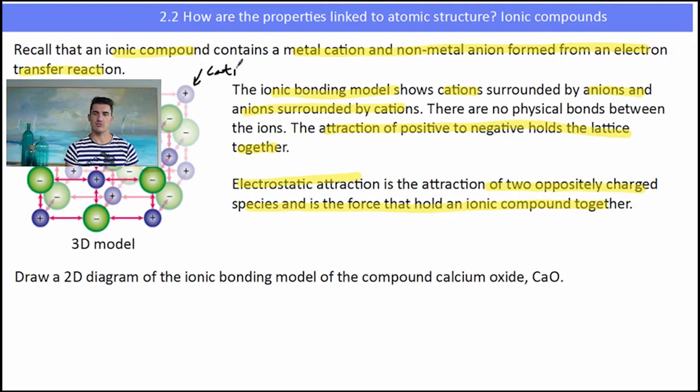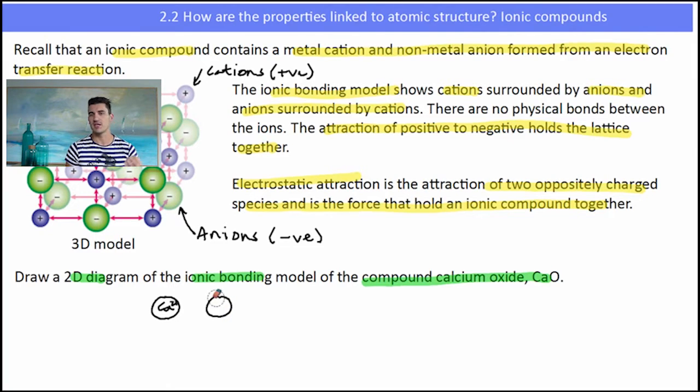Now the electrostatic attraction is described as the attraction between something that's positively charged and something that is negatively charged. So we have the cations in the lattice, which are attracted to the anions in the lattice and each of those is surrounded by the opposite one. So we get this strong electrostatic force of attraction. Up there is a 3D model. We're asked to draw a 2D model and we're going to use calcium oxide as an example. So when you draw this, you need to make sure that you label the ions.